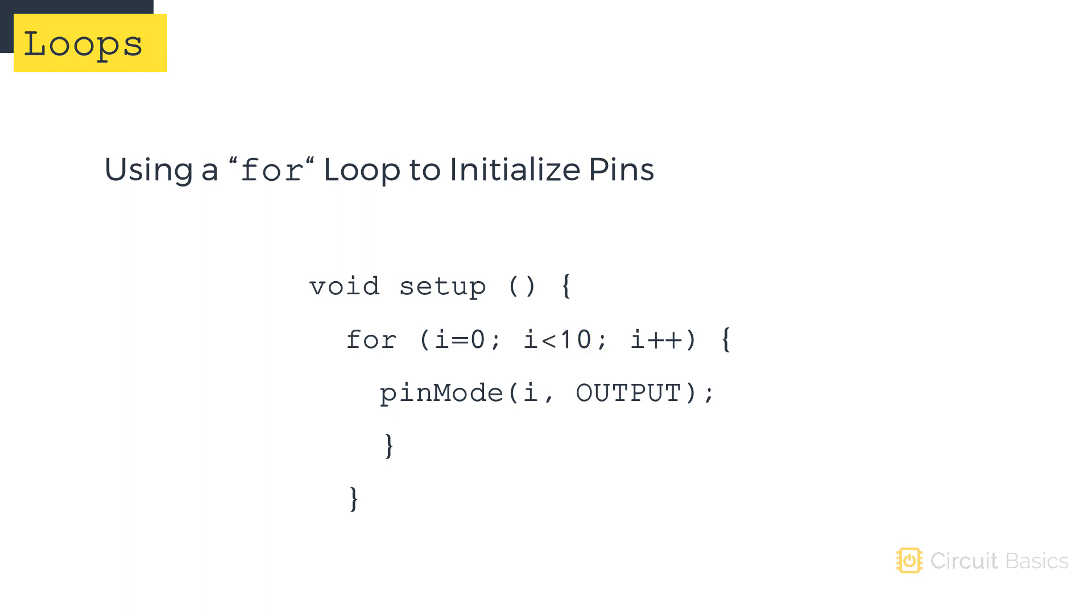Variables declared inside of loops are local variables. They can't be used outside of the loop. So the i variable we used in the for loop is only defined inside the for statement.